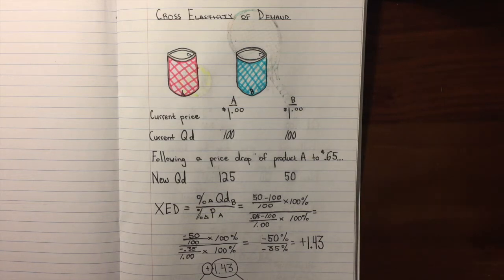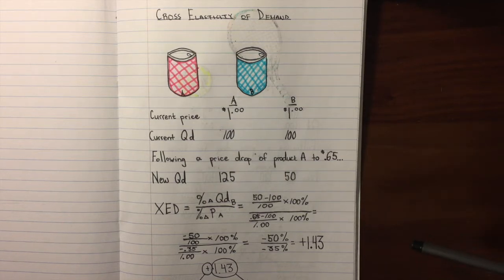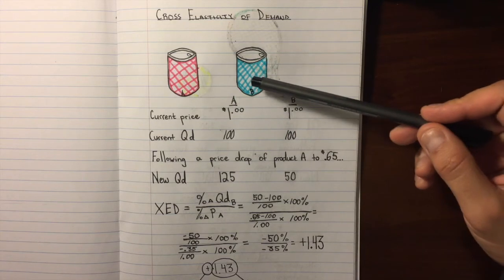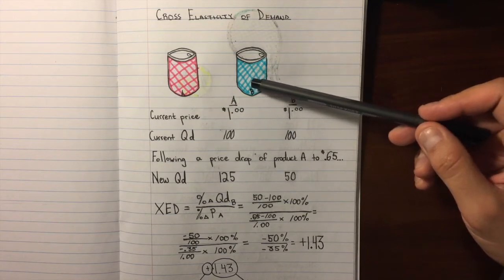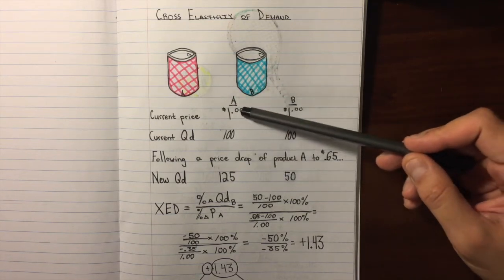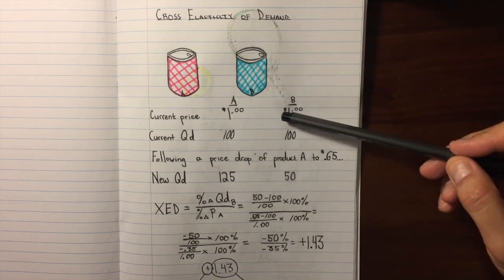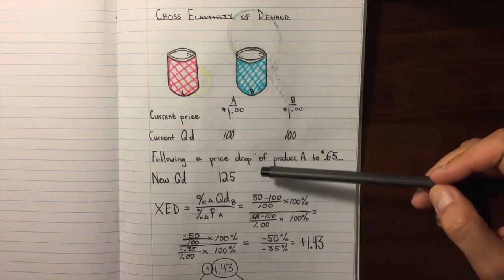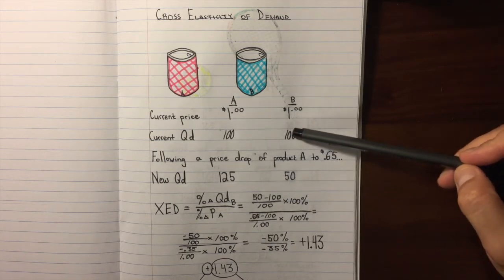In this video, we're going to take a look at cross elasticity of demand, which measures the responsiveness of quantity demanded of product B to a change in the price of product A. We're going to look at two products — drink A and drink B — and put them at the same starting price of $1 with an equal quantity demanded of 100.